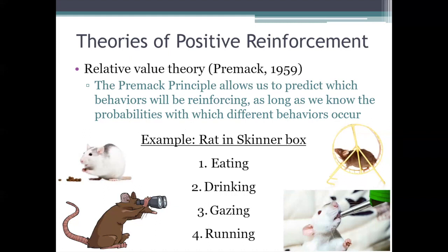But you couldn't use running in the exercise wheel to reinforce drinking, because running is a less probable behavior for this rat than drinking. The rat prefers drinking over running, so drinking could reinforce running, but running can't reinforce drinking. In fact, if you required this rat to run after it drank — if you set up that contingency — then that would actually punish the drinking behavior. We'd see a decrease in the frequency of drinking because it produced this less valuable behavior, running, as a consequence.